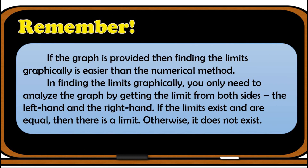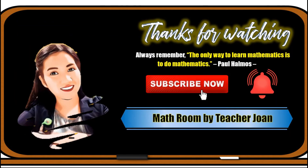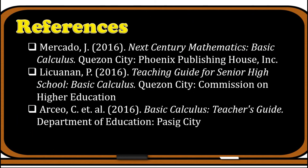Did you get all of those answers correctly? If yes, great job! Here are the important things to take note: if the graph is provided, finding the limits graphically is easier than the numerical method. In finding limits graphically, you only need to analyze the graph by getting the limit from both sides — the left-hand and the right-hand. If the limits exist and are equal, then there is a limit; otherwise it does not exist. This is the end of our discussion about evaluating limits graphically. Thanks for watching — please like, comment, and share, and if you're new to my channel, subscribe and click the notification bell. Bye everyone!